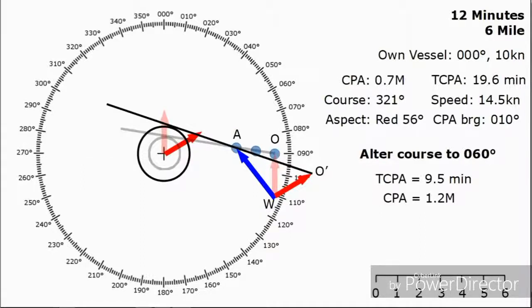Of course, for any course alteration, all you need to do is adjust the angle that you want to go, place that from the original W position to find the new O prime position, join O prime to A, and continue that line through to find the new relative line of approach to find the new closest point of approach. You need to assume that the other vessel's course and speed will not be changing.